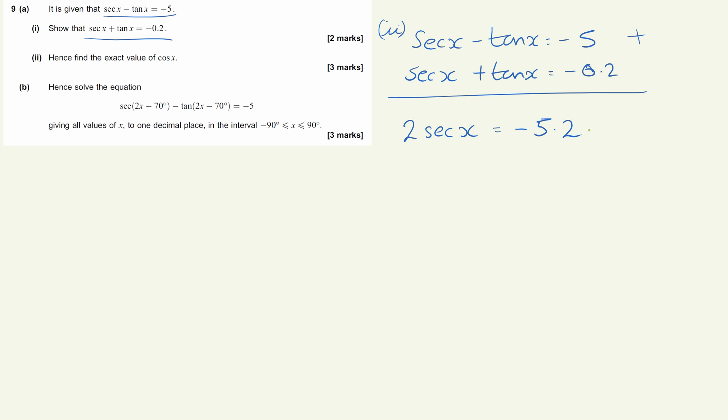Now if we divide through by 2, we're going to get sec x is equal to minus 2.6. And then if we're wanting the exact value of cos, well let's just rewrite this. So rewrite sec as 1 over cos x is still equal to minus 2.6.